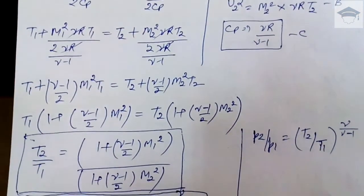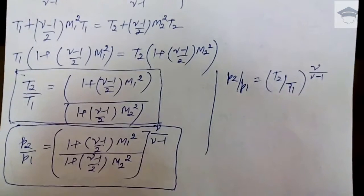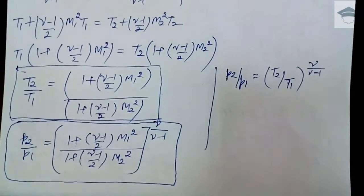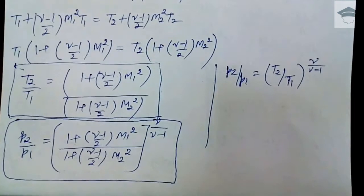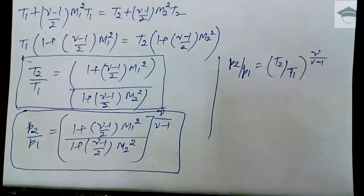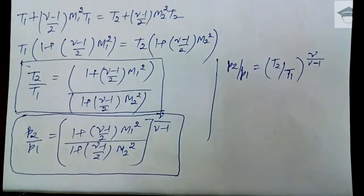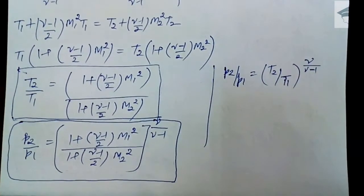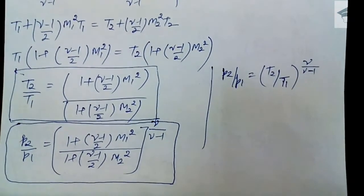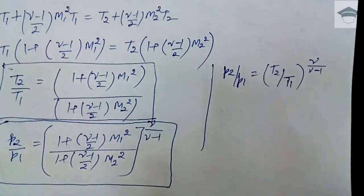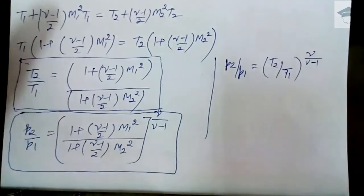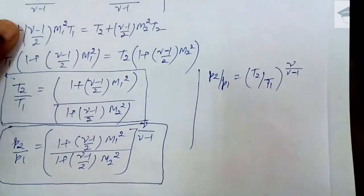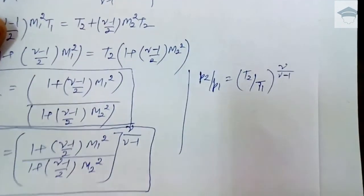Since P2/P1 = (T2/T1)^(γ/(γ−1)), we can find P2/P1 = { [1 + (γ−1)/2 · M1²] / [1 + (γ−1)/2 · M2²] }^(γ/(γ−1)). So we have found the relations between T2/T1 and P2/P1 for the converging-diverging nozzle.